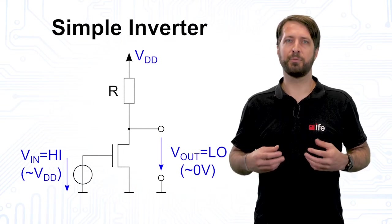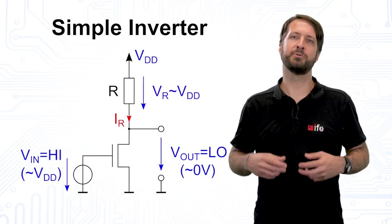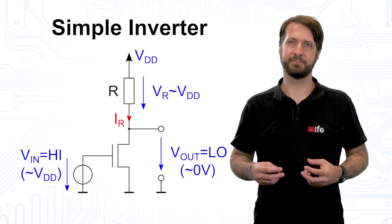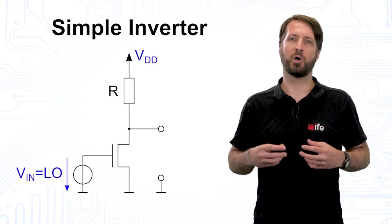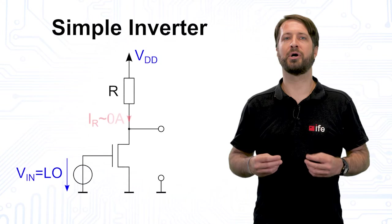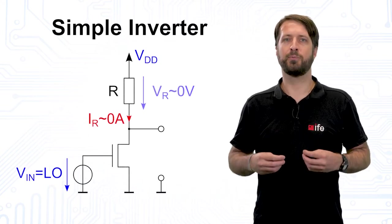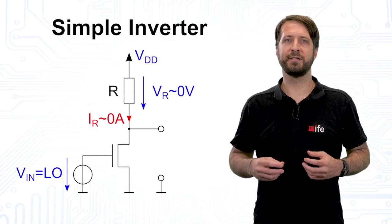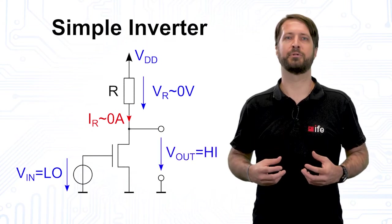The supply voltage will cause a current to flow through the resistor, resulting in losses. Inversely, when the input level is low, the NMOS is open and ideally no current will flow. Since there is no current, no voltage will drop at the resistor and the output is therefore pulled up towards the supply voltage.